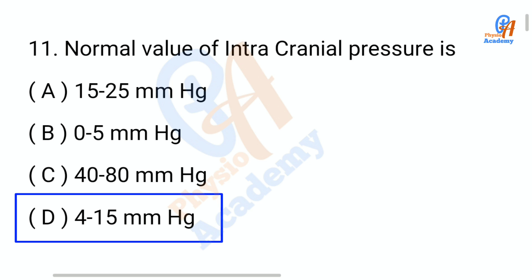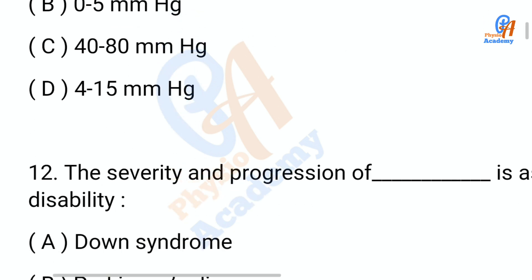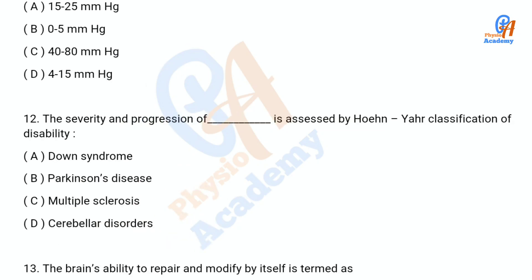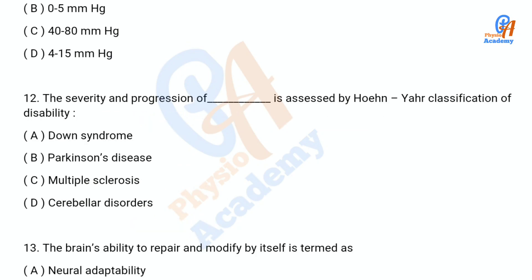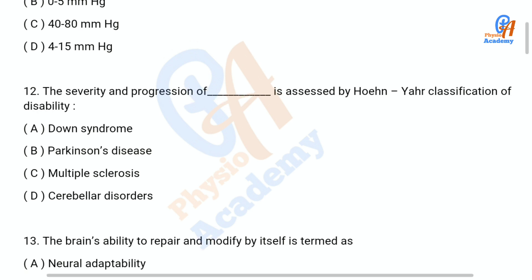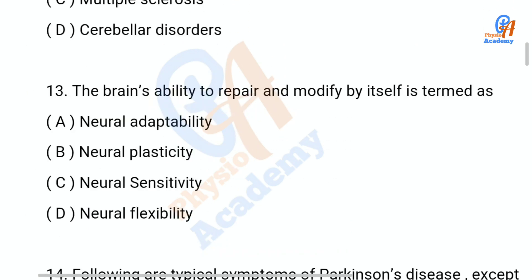Question number 12: The severity and progression of blank is assessed by Hoehn-Yahr classification of disability — option A: Down syndrome, option B: Parkinson's disease, option C: multiple sclerosis, option D: cerebellar disorders. The correct answer is option B: Parkinson's disease.